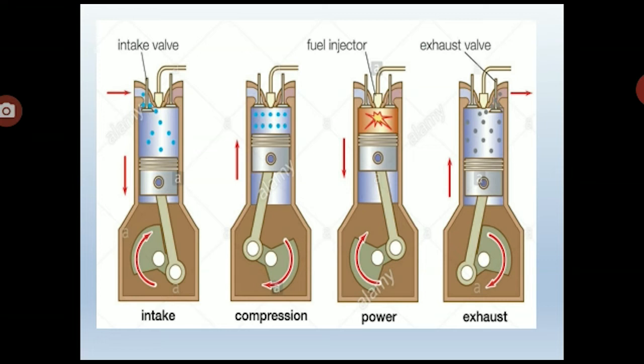The next cycle is the compression stroke. In the compression stroke, the piston moves from BDC to TDC and the air is compressed in the cylinder. During this stroke, both valves remain closed, isolating the combustion chamber from ambient air. Due to high compression, the pressure and temperature of the air rise. At the end of the compression stroke, the fuel injector injects a metered quantity of fuel in finely atomized form into the cylinder.